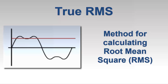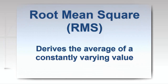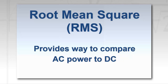As you may recall from a previous AEMC video, root mean square, or RMS, is a mathematical concept used to derive the average of a constantly varying value. In electronics, RMS provides a way to measure effective AC power that allows you to compare it to the equivalent heating value of a DC system.